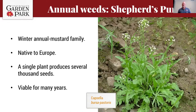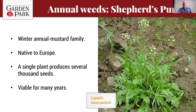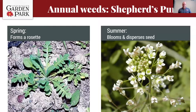Shepherd's Purse is a winter annual, a member of the mustard family, native to Europe, producing several thousand seeds that are viable for many years. It germinates in the fall, overwinters as a small plant, comes up early in the spring, and then in the summer pops up with a bloom and disperses its seed.